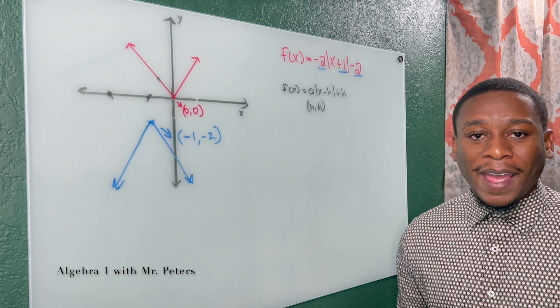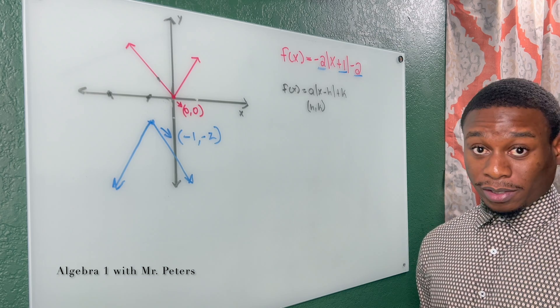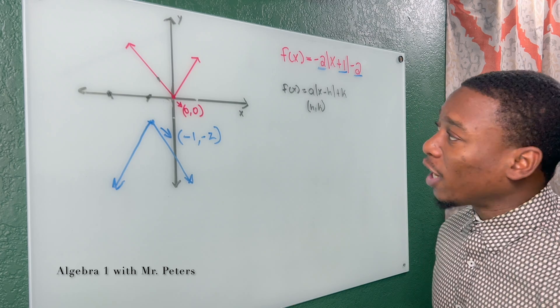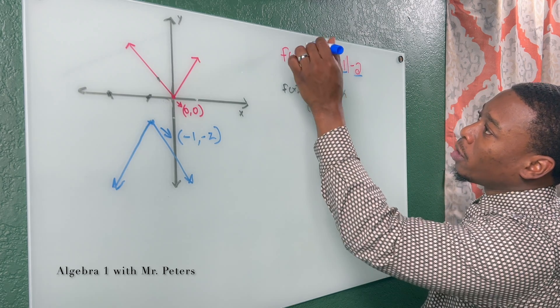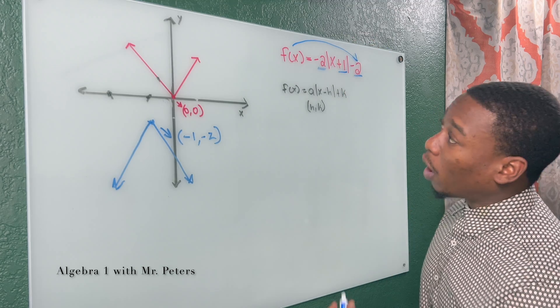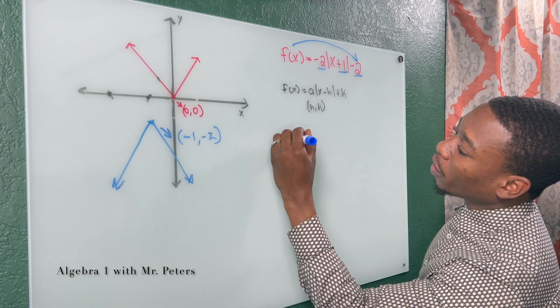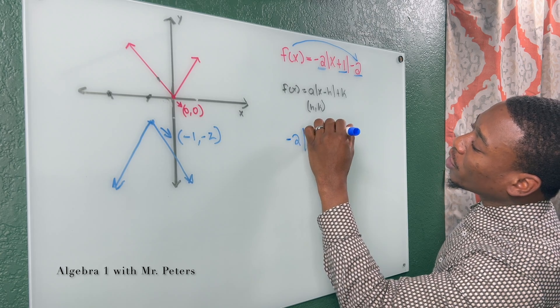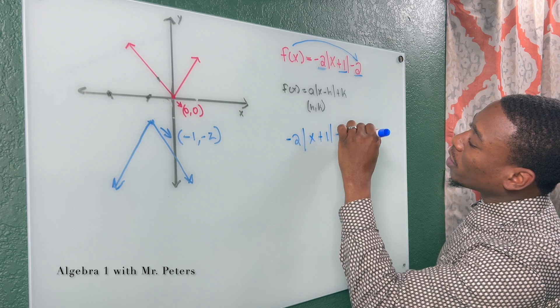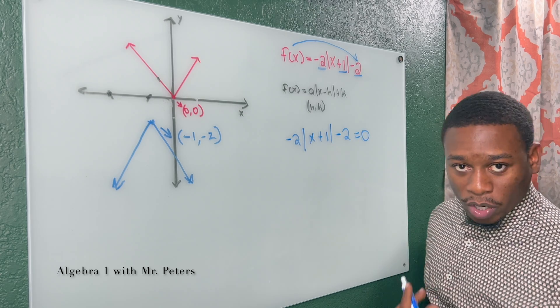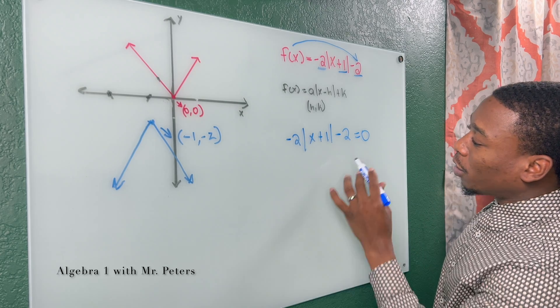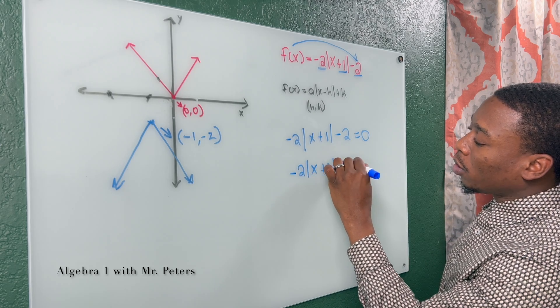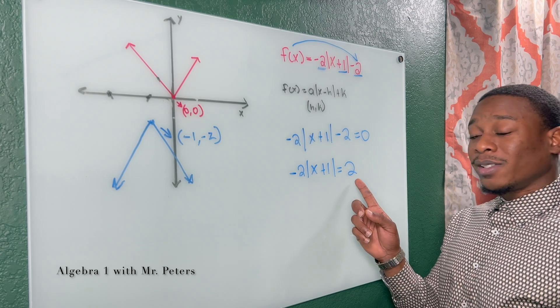But what if the problem then asked you to identify the solutions to the absolute value graph? So before we get to the actual answer, let's just start working it out. So replace f of x with zero like the first problem. So I have negative two times the absolute value of x plus one minus two is equal to zero. We know we have to get the absolute value by itself. I add two on both sides first. This is what we're going to get. So right now we're in the clear because this is positive.